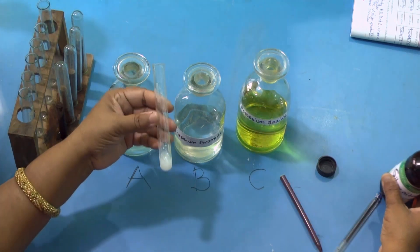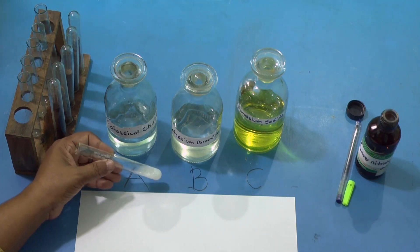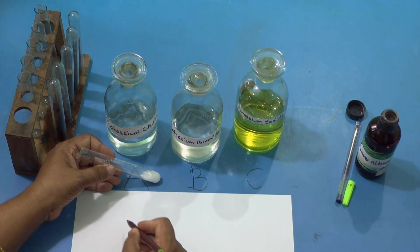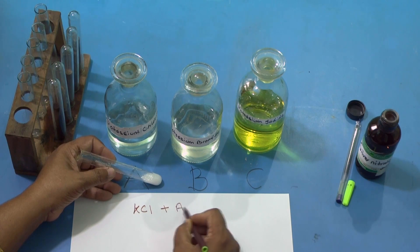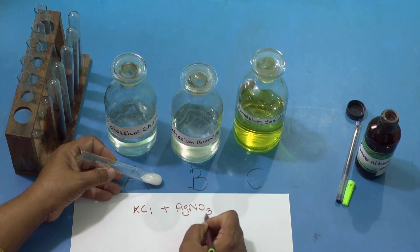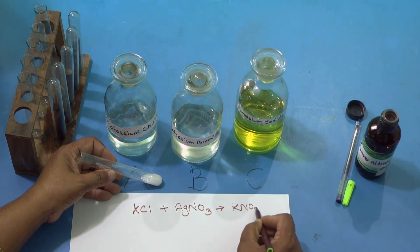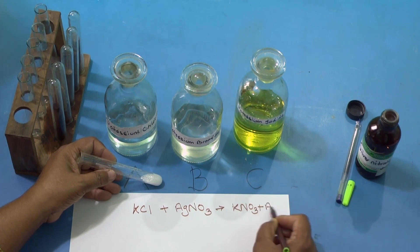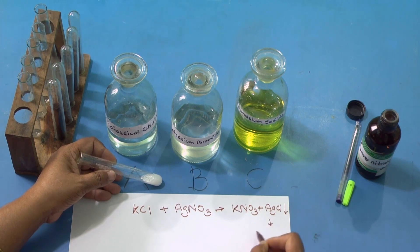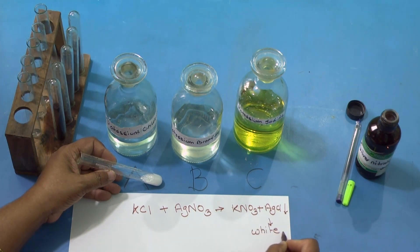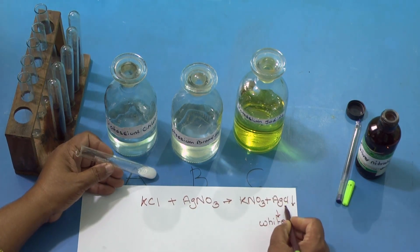We got white PPT — very clearly we can see white PPT. Children, the solution was of KCl. I added AgNO3 and it gave me KNO3 plus AgCl precipitate, which is white in color. White PPT is AgCl, formed by potassium chloride. So this is the test for the chloride radical.